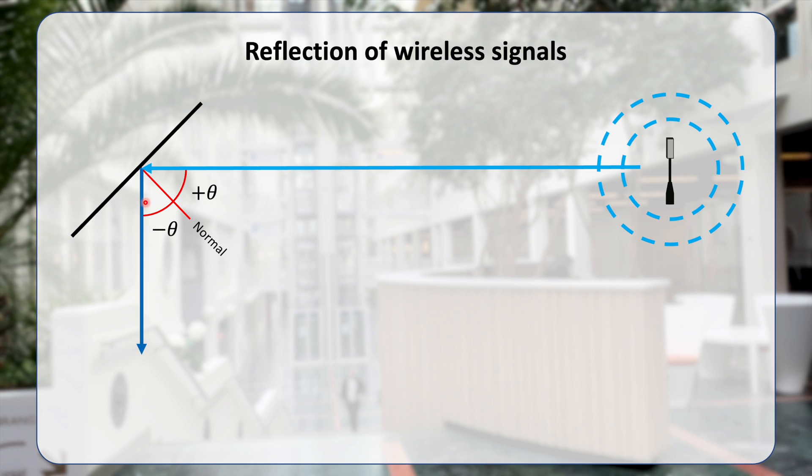Therefore, the reflected signal is going straight down in this picture. This is known as Snell's law, which is saying that the incident angle and the outgoing angle are the same, but on the other side of the normal.